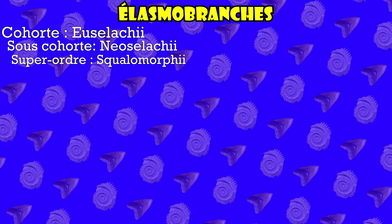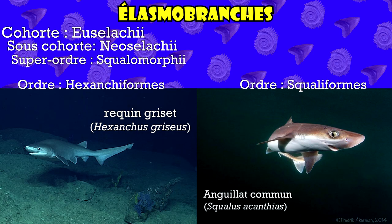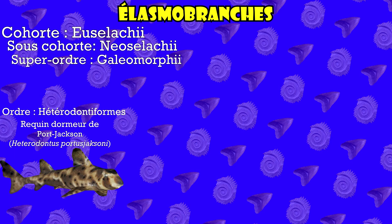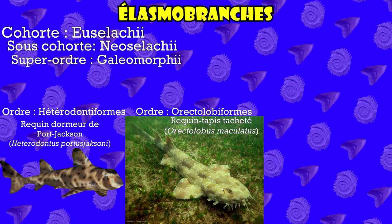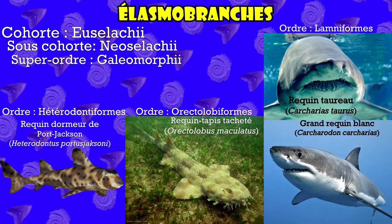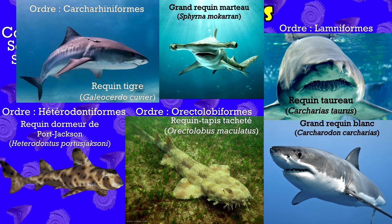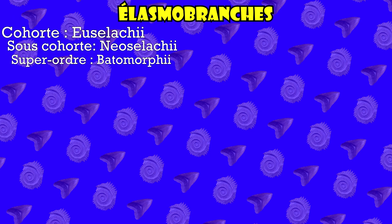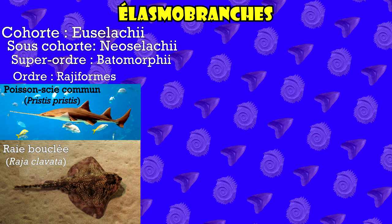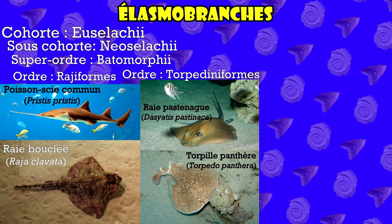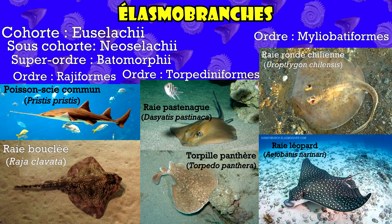Dans le premier groupe, on va retrouver divers ordres, tels que les hexanchiformes avec le requin griset, ou les squaliformes avec l'aiguillat commun. Dans le second groupe, on retrouve l'ordre des hétérodontiformes avec le requin dormeur cornu, l'ordre des orectolobiformes avec les requins carpette, les lamniformes avec entre autres le requin taureau et le grand blanc, et l'ordre frère, les carcharhiniformes, avec le requin marteau, le requin tigre, etc. Pour le dernier groupe, on va y retrouver nos raies, composées de trois ordres : les rajiformes comportant la raie bouclée ainsi que les poissons-scie, les torpediniformes avec les raies électriques et torpilles, ainsi que le genre dasyatis et bien d'autres, et l'ordre des myliobatiformes avec la raie léopard, l'urogymne, le trigon, etc.